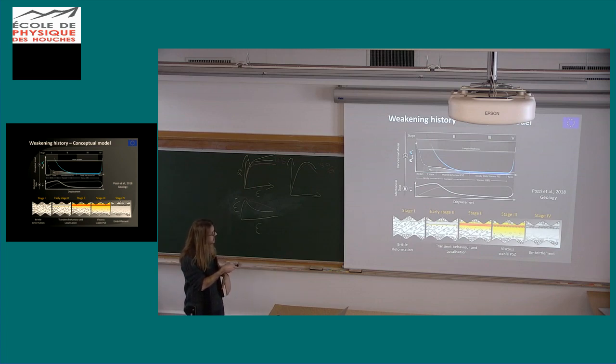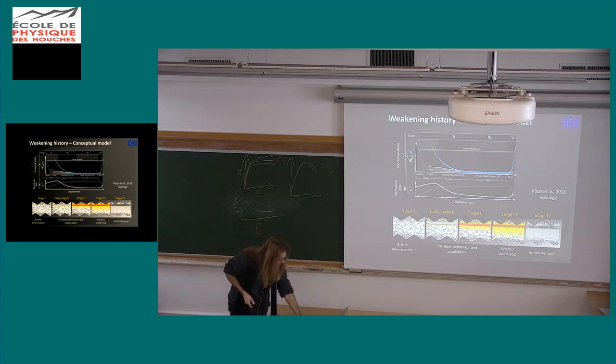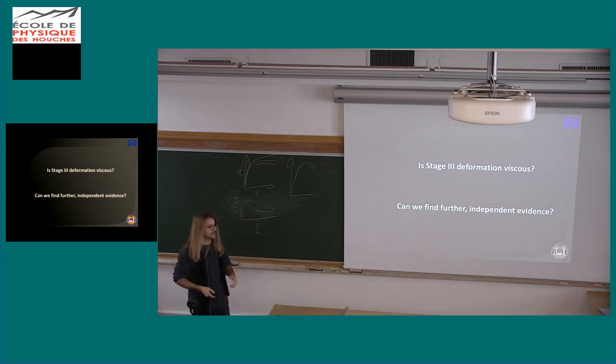We have a transition from brittle cataclasis, prepares a principal slip zone where you build up the temperature, and becomes gradually more viscous when the temperature increases, and you reduce its viscosity, and it turns into a macroscopic friction coefficient. And stage four, embrittlement back again when the conditions go away, temperature drops and you slow down, you go away from the viscous flow and you go back to brittle regime again.